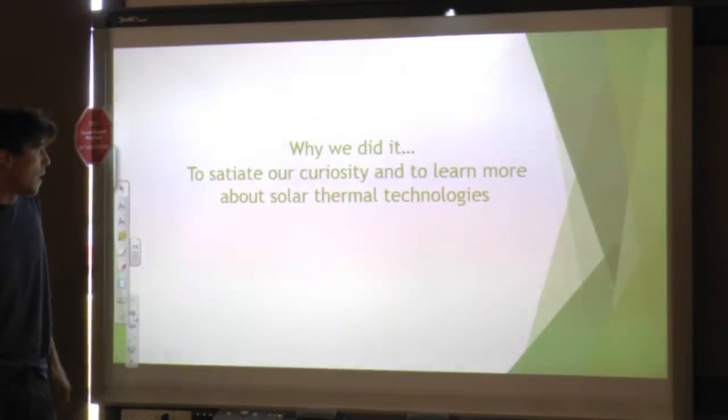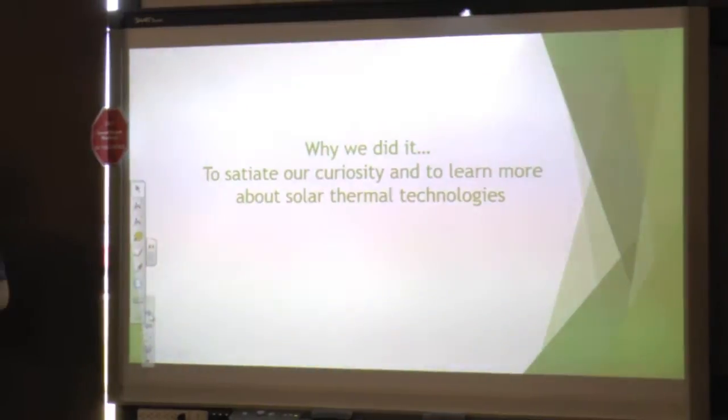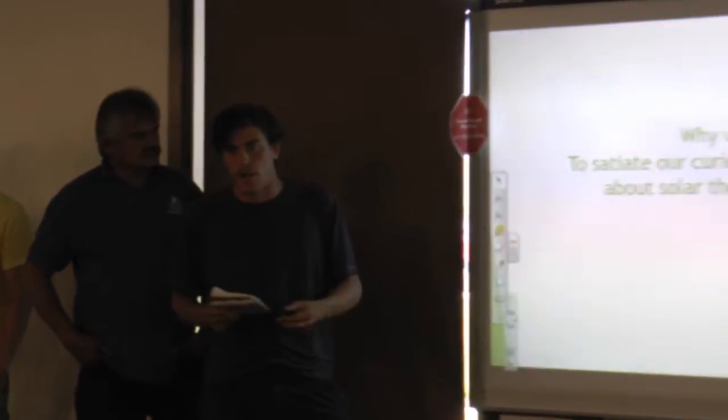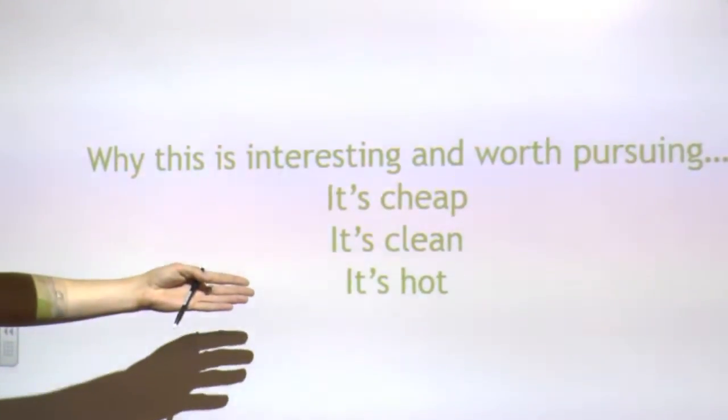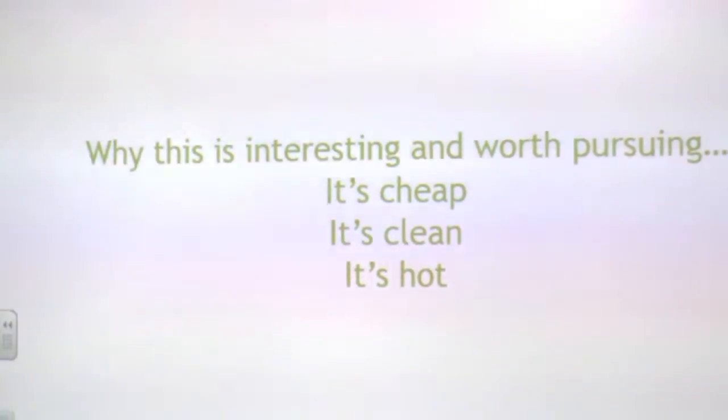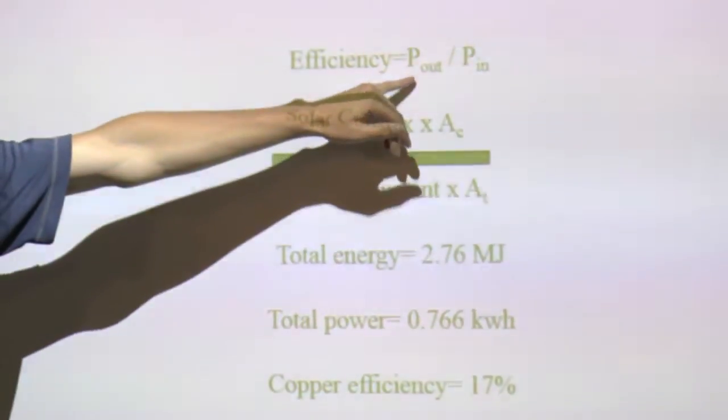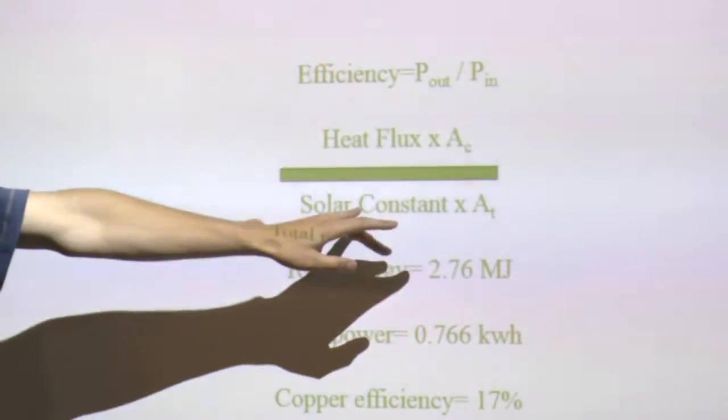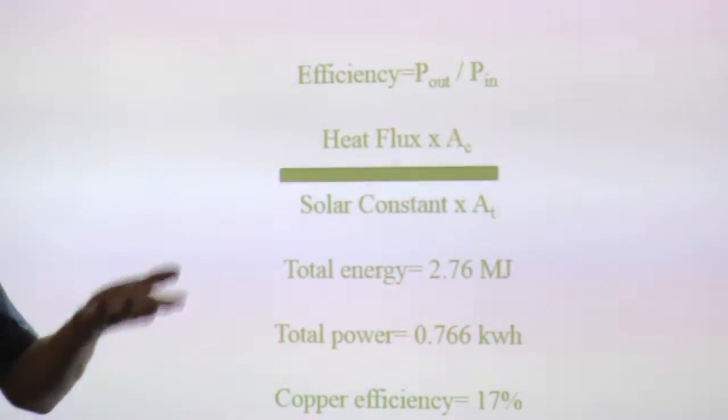Why we did it? Just to learn new things. We all have an interest in renewable energy, and we all consider it to be the future. It is effectively heating water that's being circulated through the efficiency of the collector. It's just power out over power in, which is heat flux times area of collector, and then the solar constant, which fluctuates, but it's about 1,000 watts per square meter, and so that's what we use as 1,000 watts.